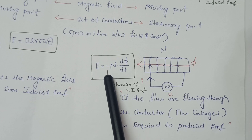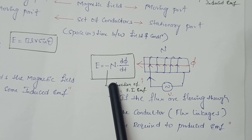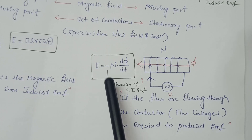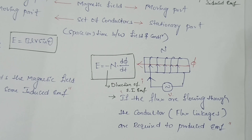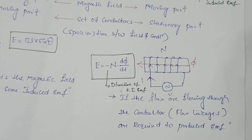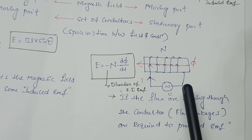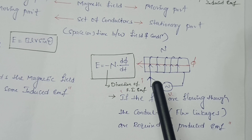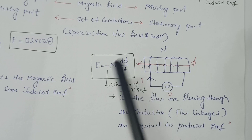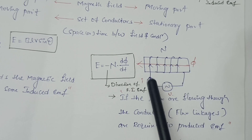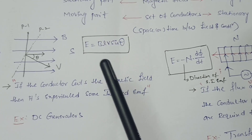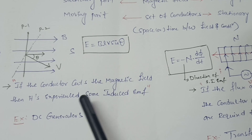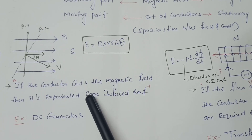The negative sign indicates the direction of the statistical induced EMF, as determined by Lenz's law. The main keyword for statistical induced EMF is that flux linkages are required to generate it. In contrast, for Faraday's first law (dynamical induced EMF), flux cuttings are required.